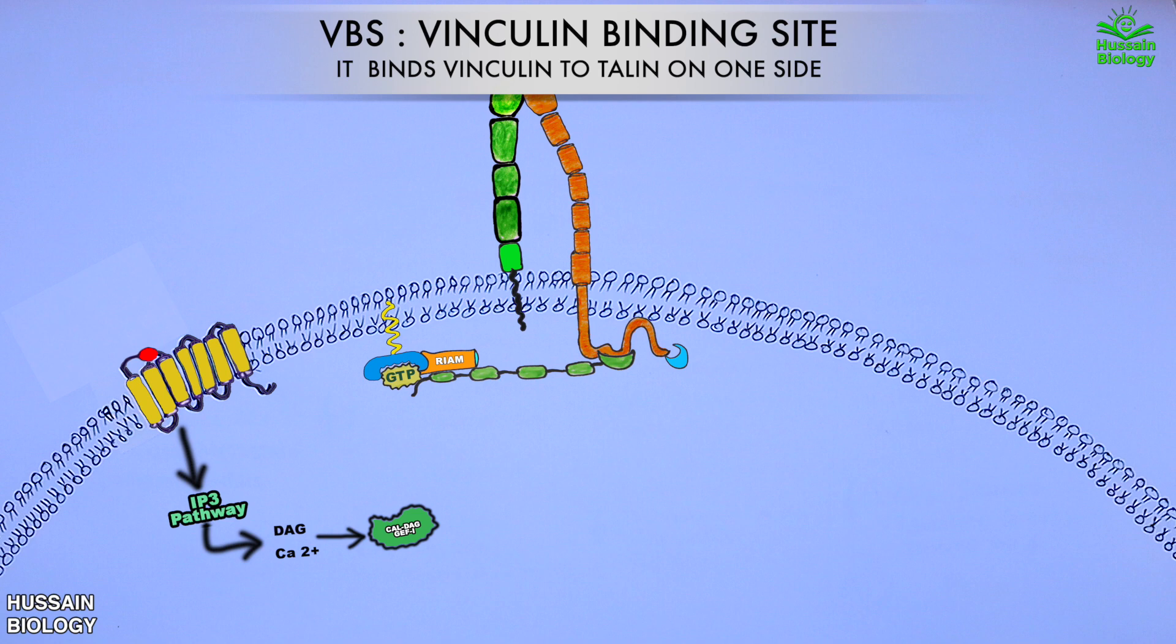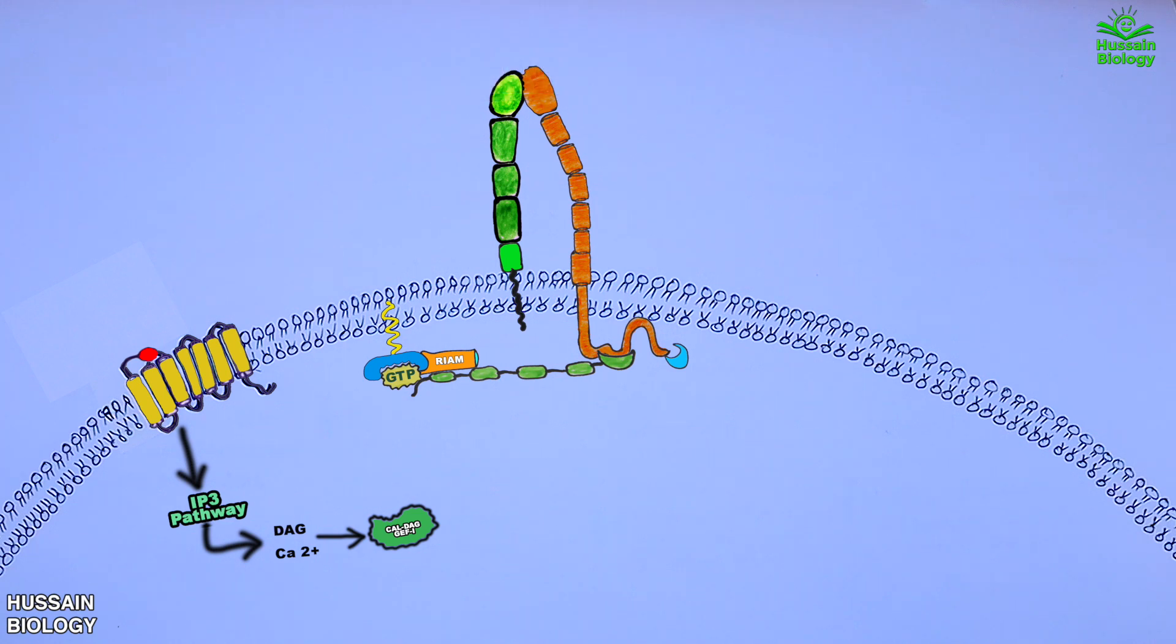Furthermore, we also have VBS on talin, that's vinculin binding site on talin. When VBS is open for interaction, the vinculin also binds with the talin on one side and on the other side it binds with the actin filament as shown in the animation. So vinculin acts as a linkage between talin and the actin filament.